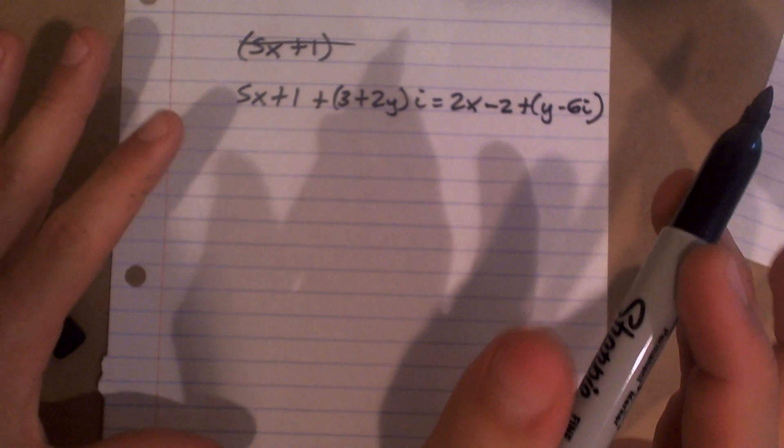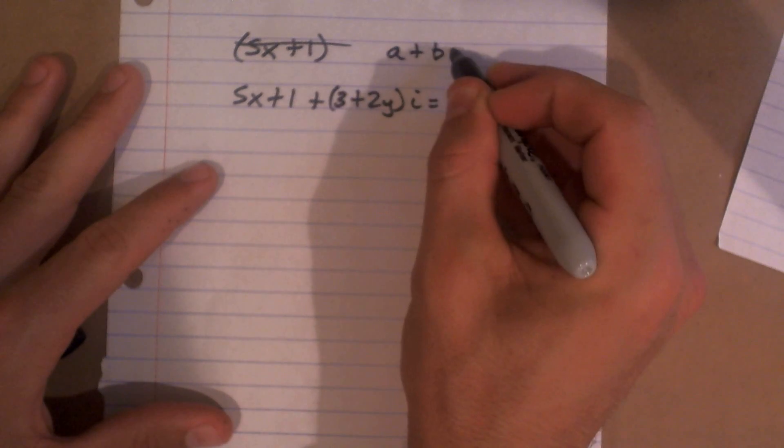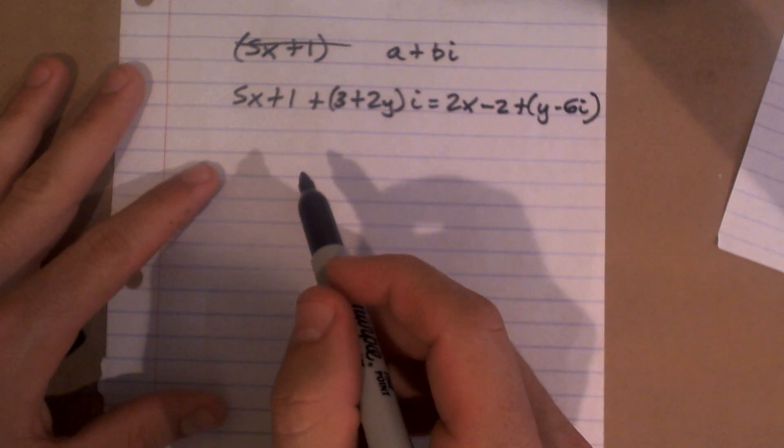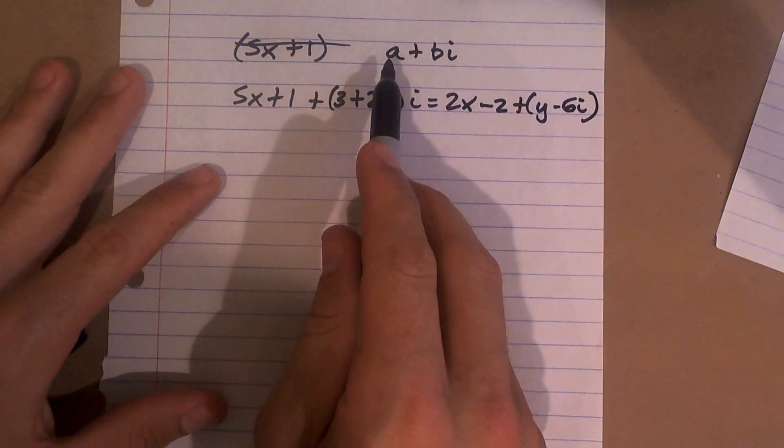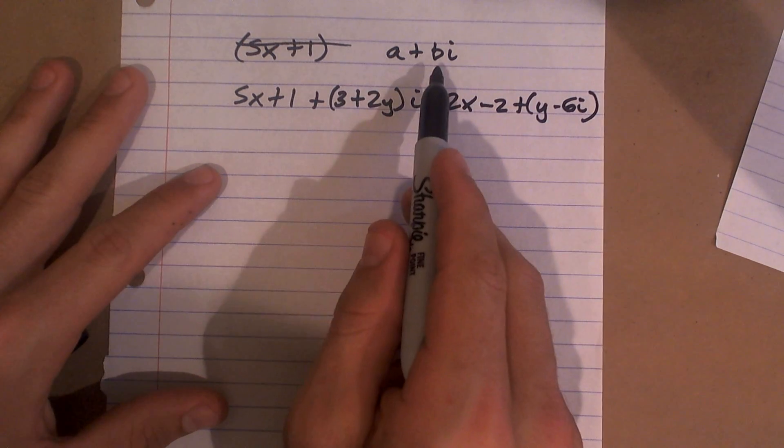Okay, so the main important thing we're doing is we're talking about complex numbers, which means they have to be in the form of a plus bi. Where a is going to be your real part of your number and b is going to be your imaginary part.